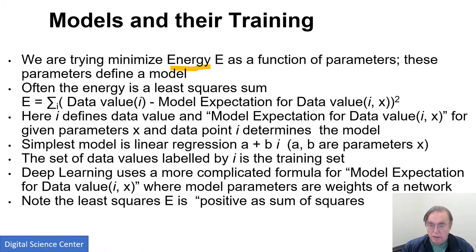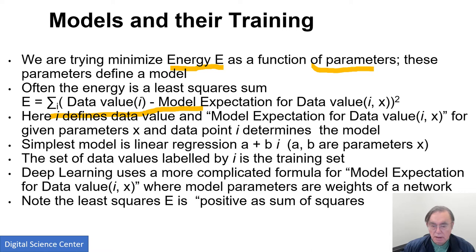In the general formulation, we have our loss function or energy E, which is a function of parameters — essentially the parameters of the model. Sometimes this energy is a least squares sum, which is illustrated here: the sum of the difference between a data value and a model for the data. The data points are labeled by i. The model is labeled by x as parameters, and then we need the expectation of the model for the data point i.